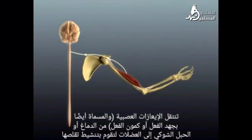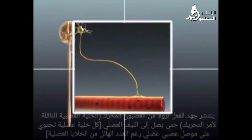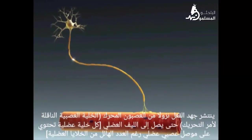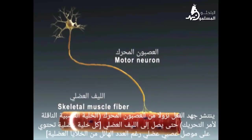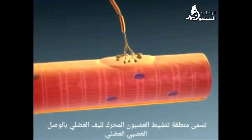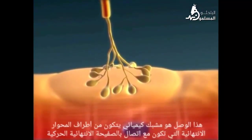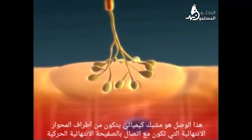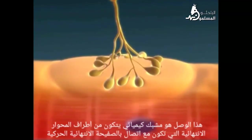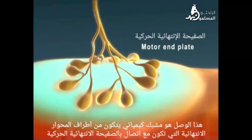Nerve impulses, also known as action potentials, travel from the brain or spinal cord to trigger the contraction of skeletal muscles. An action potential propagates down a motor neuron to a skeletal muscle fiber. The site where a motor neuron excites a skeletal muscle fiber is called the neuromuscular junction — a chemical synapse consisting of the points of contact between the axon terminals of a motor neuron and the motor end plate of a skeletal muscle fiber.